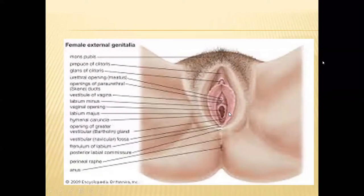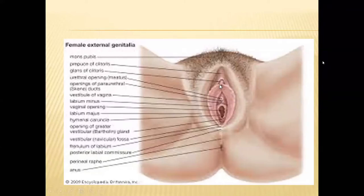The labia minora, also referred to as the inner lips, consists of two hairless skin folds made up of erectile tissue. Unlike the labia majora, the labia minora is very sensitive as it contains erectile connective tissue. It is located inside the labia majora. Anteriorly it covers the clitoris forming the prepuce, and posteriorly it forms the frenulum. The posterior portion forms the fourchette. Between the fourchette and the vaginal orifice is the fossa navicularis.